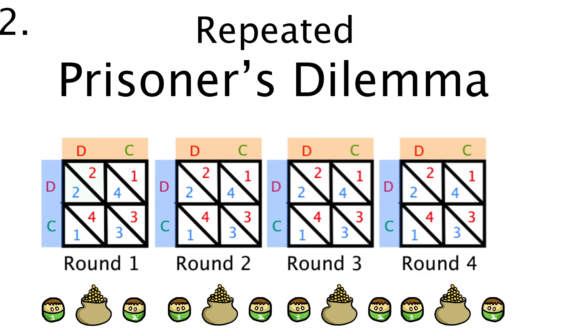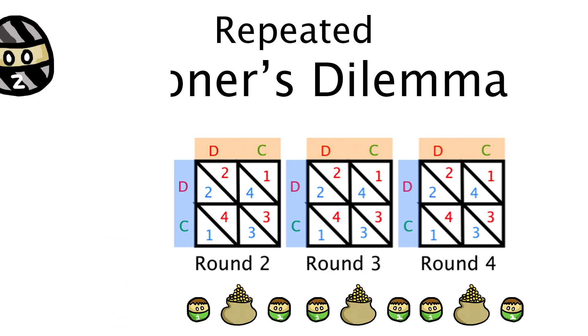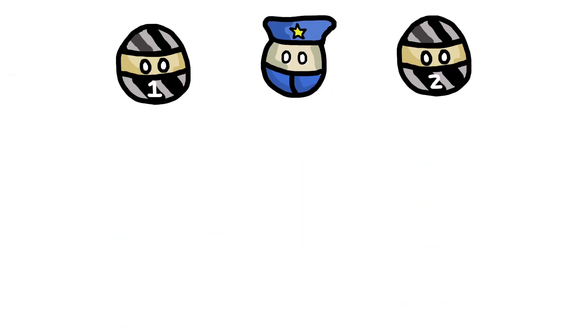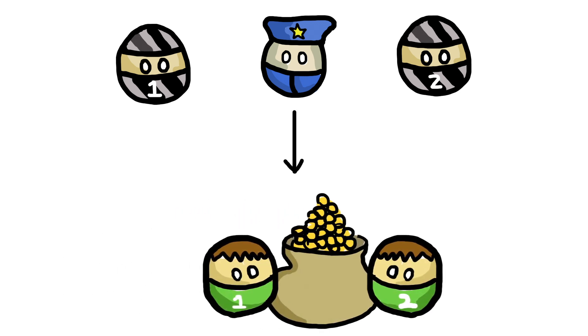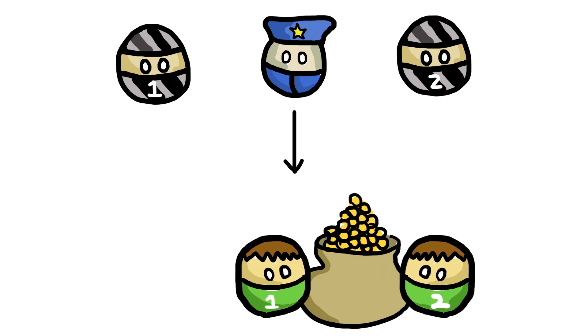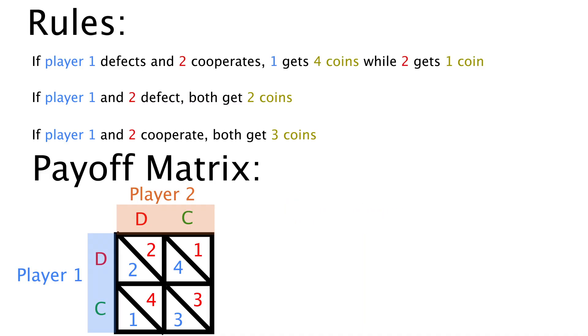Now, let's analyze the prisoner's dilemma a step further by observing what would happen if the game is repeated multiple times. Will the players' strategies change or will they stick to betrayal? Let's change the example slightly to iron out some technicalities. So now, instead of fighting for a reduced jail sentence, the two players are trying to get gold. The rules remain exactly the same and the game is identical. Just take a second to compare this payoff matrix with the previous one and digest this information.